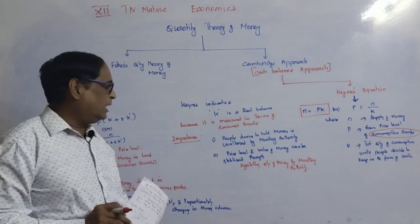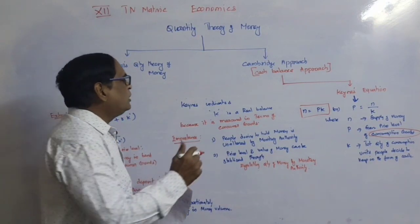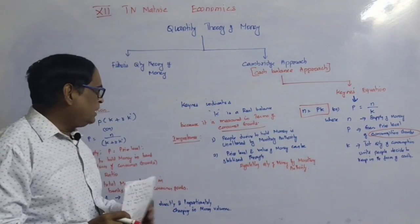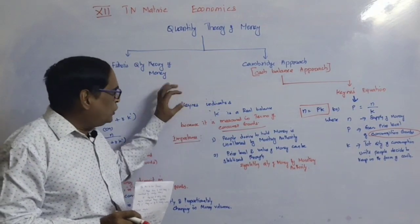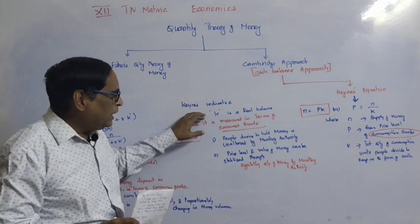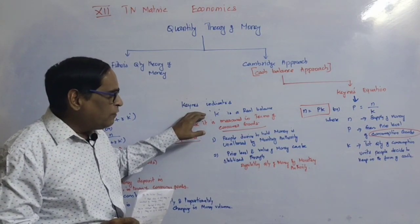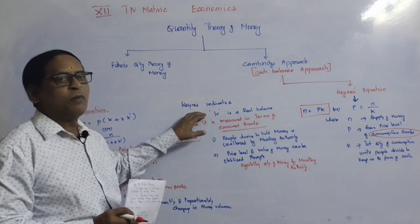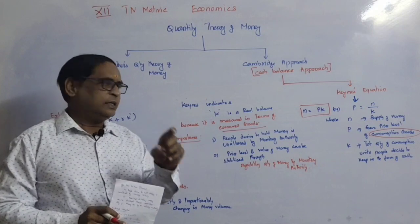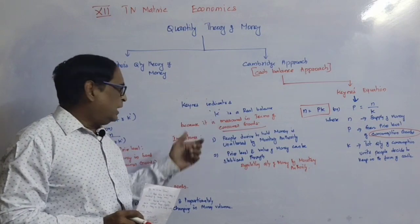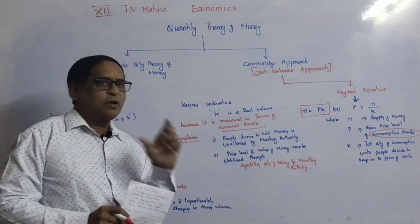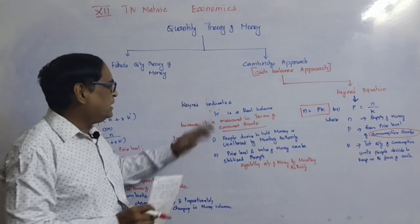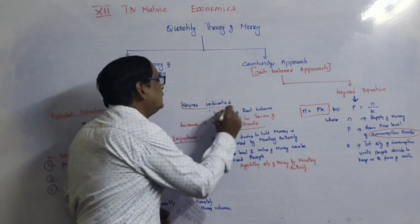The importance of this formula is that it concentrates on consumer goods. According to Keynes, K is the total quantity of consumption units people decide to keep in the form of cash — that is the real balance. It is measured in terms of consumer goods, so K is the correct real balance.